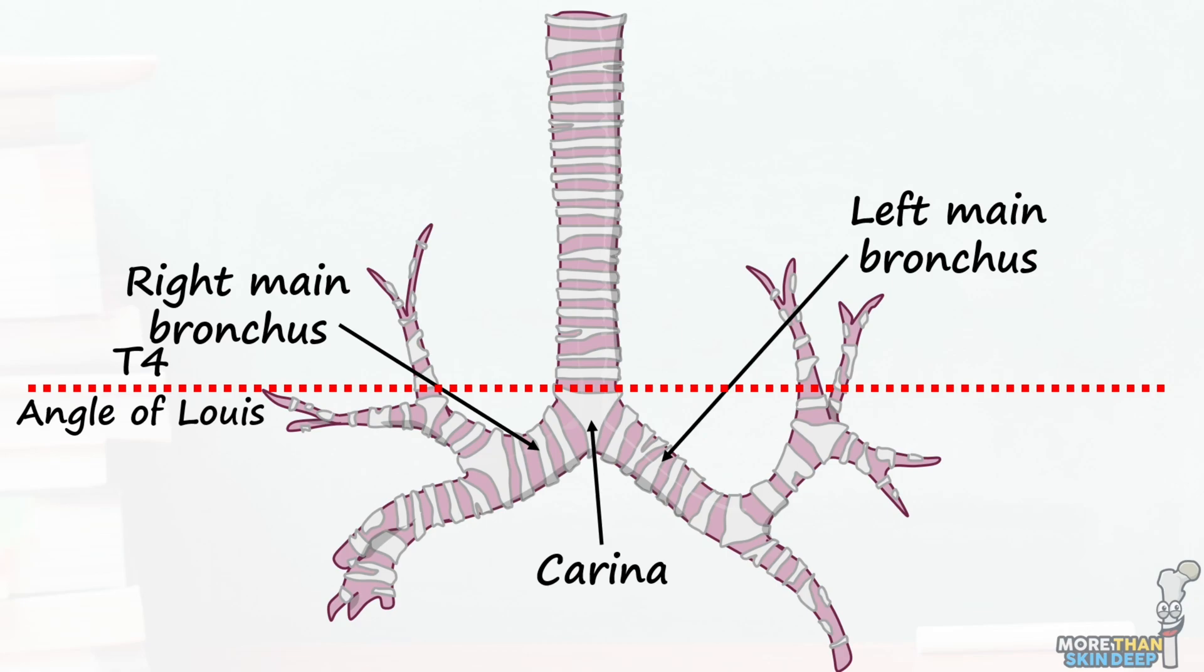The bronchi is structurally similar to the trachea, only narrower in diameter and with less consistent cartilaginous rings. The right main bronchus, which carries air to the right lung, is oriented more vertically than the left, and thus inhaled foreign bodies are more likely to become lodged down the right side.